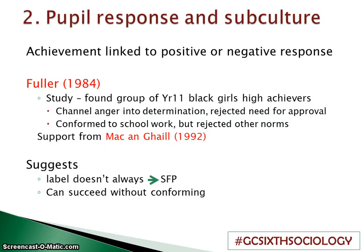The second factor is pupil responses and subcultures — whether students act positively or negatively to the labels placed on them by teachers. Fuller found that it's not always a negative thing. A group of Year 11 black girls Fuller studied were very high achievers. They channelled their anger into determination and the idea of proving their teacher wrong. They also rejected the need for approval, not caring whether the teacher thought positively of them. They conformed to the schoolwork but rejected other norms such as rules and dress code.